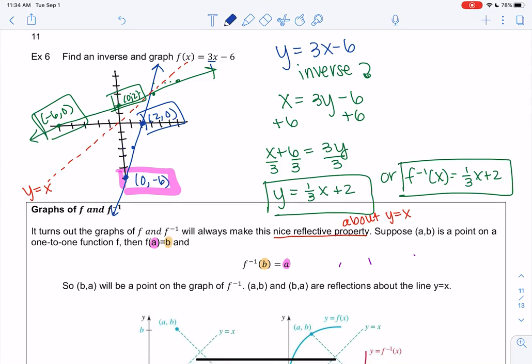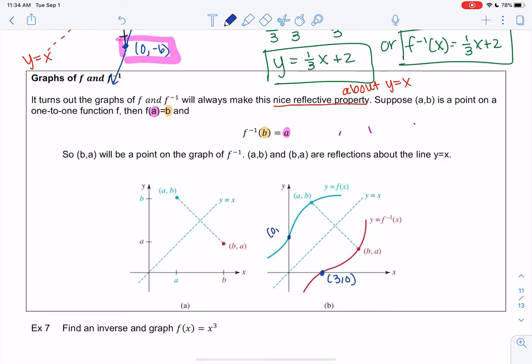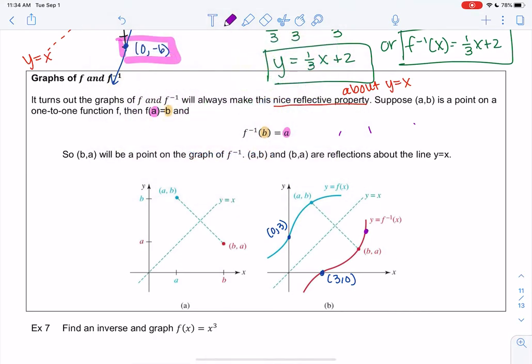You'll see (0,2) was on the inverse and (2,0) is on the original. They're opposites of each other, which is what an inverse is—x and y are being switched. Anytime we draw an inverse, (a,b) is on my original and (b,a) is on the inverse. Let's say this is (4,5), then (5,4) would have to be on the original because x and y are getting switched.